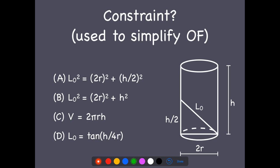So let's see. So L₀² equals (2r)² + (h/2)². So this one here looks like some kind of a Pythagoras with this as one side, this as another side, and L₀² as the hypotenuse. So that looks like a true statement about these dimensions.